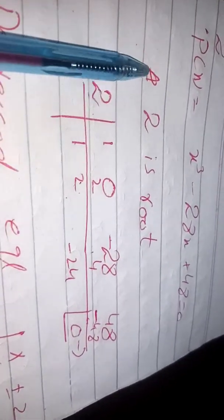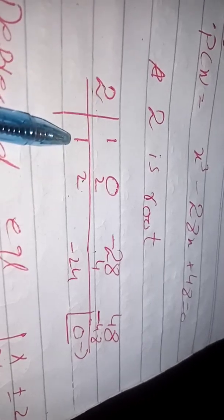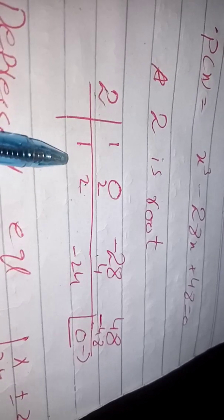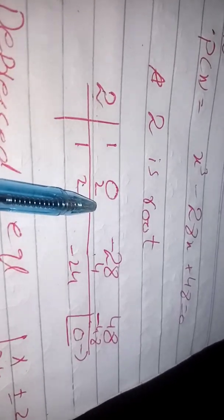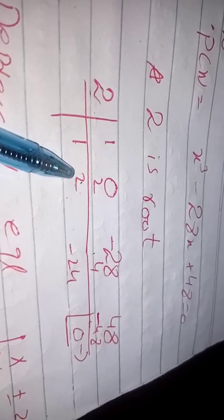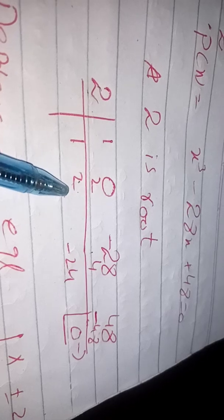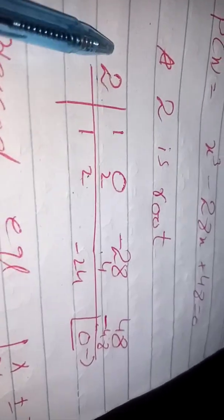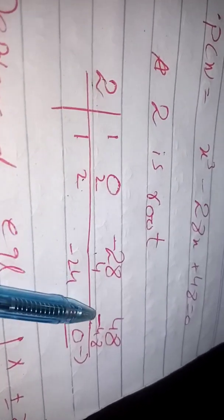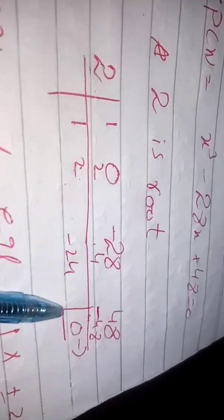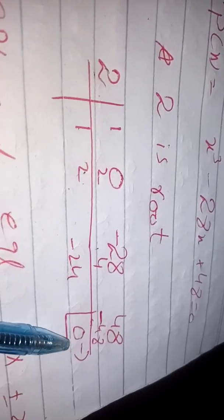Now we divide using synthetic division. We bring down 1 as it is. Then 2 times 1 equals 2; we add to get 2. Then 2 times 2 equals 4; 4 minus 28 gives us minus 24. Then 2 times minus 24 equals minus 48; plus 48 minus 48 gives us 0 remainder.